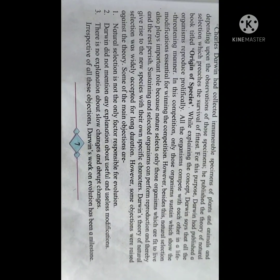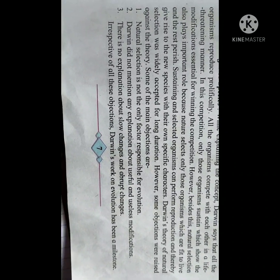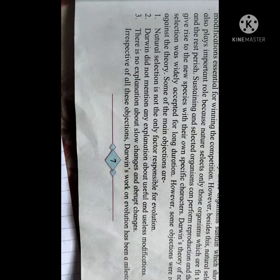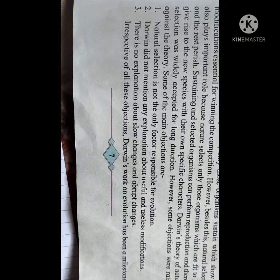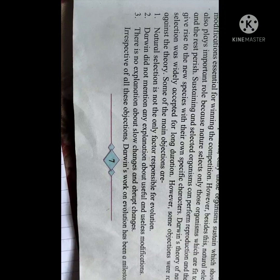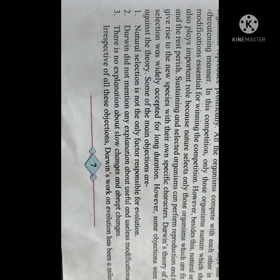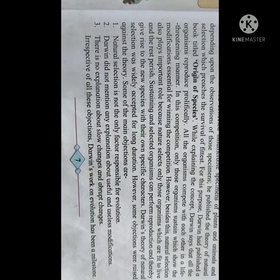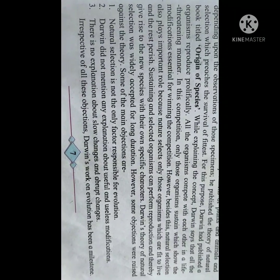These objections were raised because the theory cannot answer some questions: natural selection is not the only factor responsible for evolution; Darwin did not mention any explanation about useful and useless modifications; and there is no explanation about slow changes versus abrupt changes. Irrespective of all these objections, Darwin's work on evolution has been a milestone.